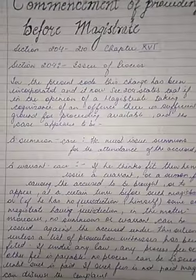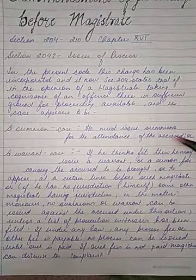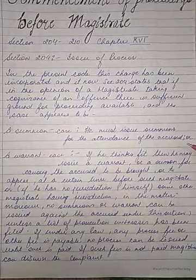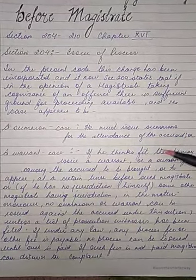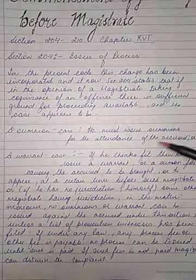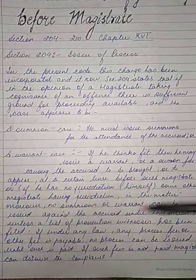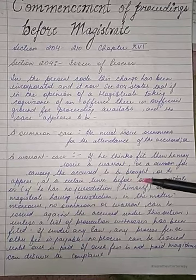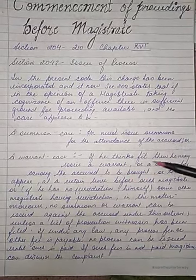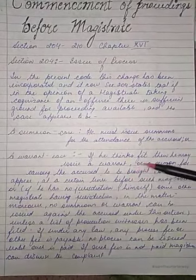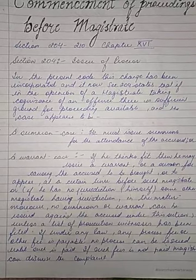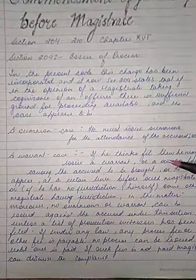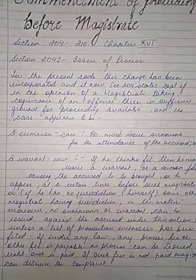In a summons case, the magistrate must issue summons for the attendance of the accused. In a warrant case, he may issue either a warrant or a summons — he can issue either according to what he feels is appropriate.